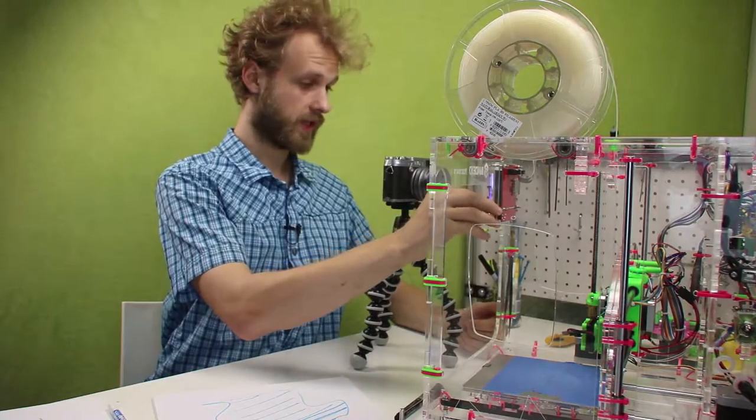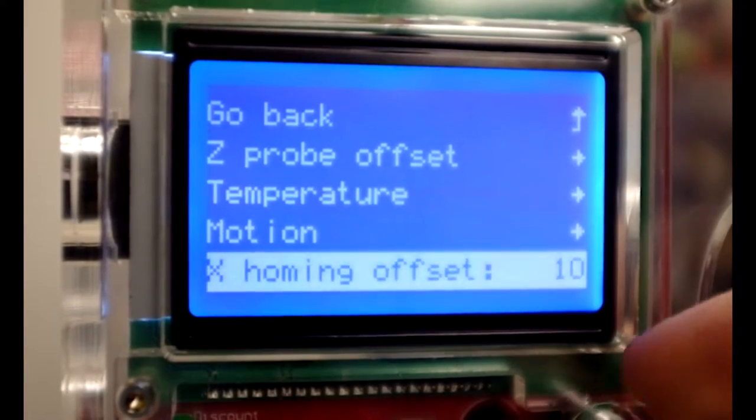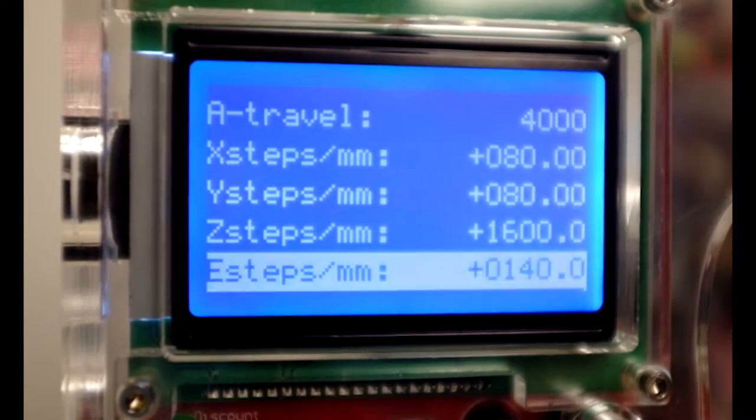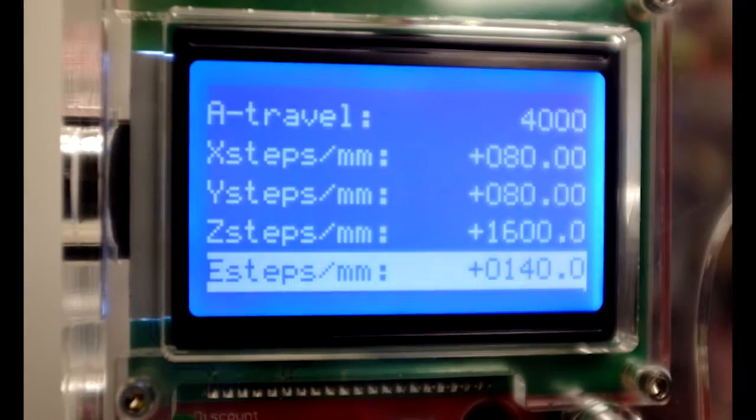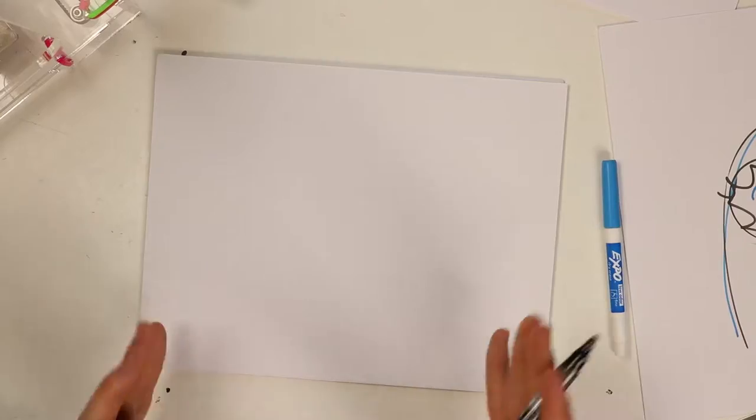Go to settings, motion, scroll all the way down. And you'll see that there's X, Y, Z and E steps per millimeter. E would be extruder in our case. That's what we want to calibrate. Of course,